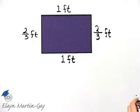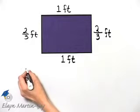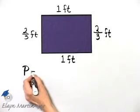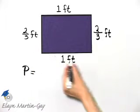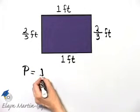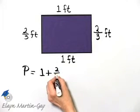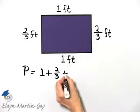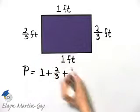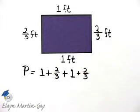Remember once again, perimeter means distance around, so to find the perimeter of this rectangle, and I'll just use P to stand for perimeter, it's going to equal this distance, which is one foot. I'll write down one right now, plus this distance, two-thirds foot, plus this distance, one foot, plus this distance, again two-thirds of a foot.